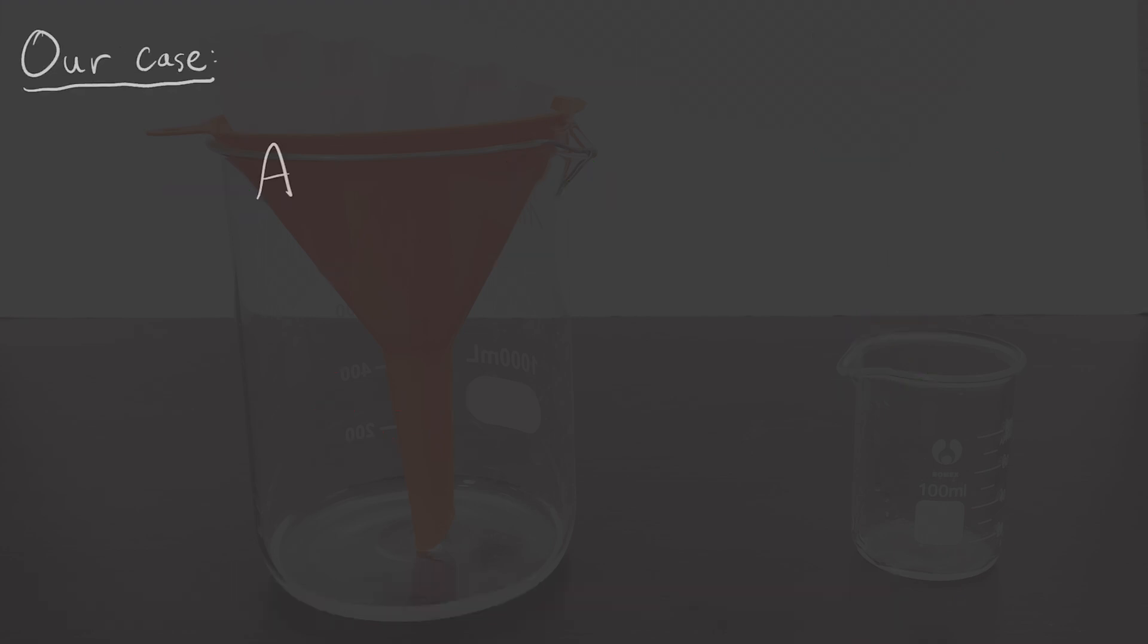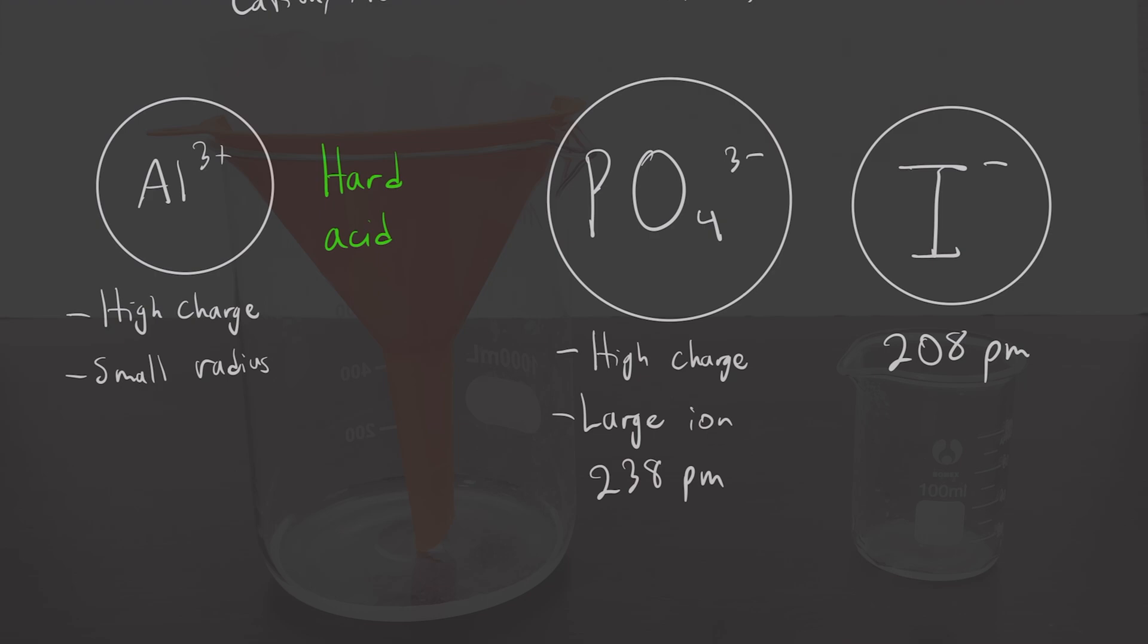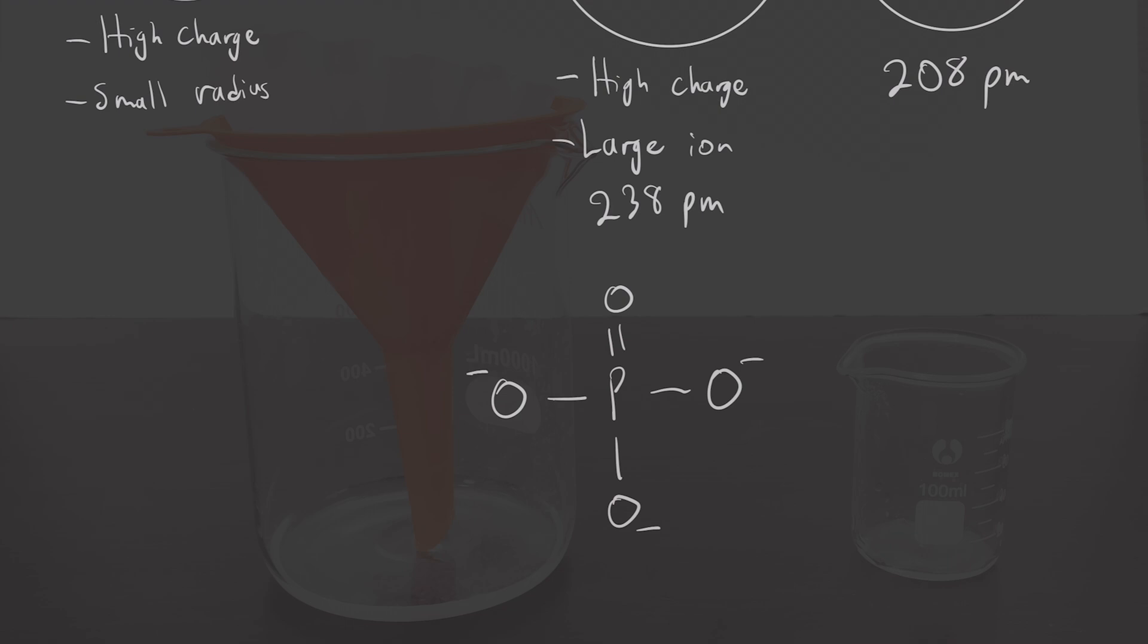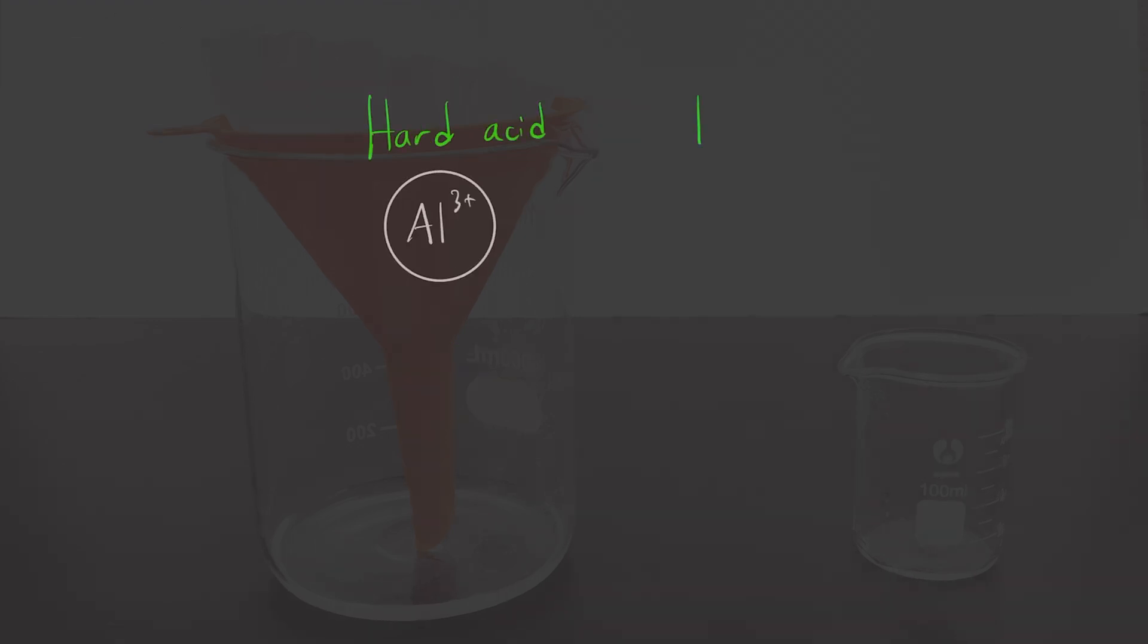For our case, the two ions we have are aluminum and phosphate. Aluminum is a very small ion with a very large charge, making it a hard acid. Phosphate is a relatively large polyatomic ion, much larger than most individual atomic anions, so you might think that it would be a soft base. However, the charge on the phosphate ion is largely distributed between the four oxygen atoms. The radius of an oxygen atom is significantly smaller than the radius of most other large ions, and combined with the overall charge on the phosphate ion, it really makes it a hard base. So we have a hard acid, aluminum, and a hard base, phosphate, giving us an ionic compound with a very large bond energy, and thus one that is going to be very insoluble.